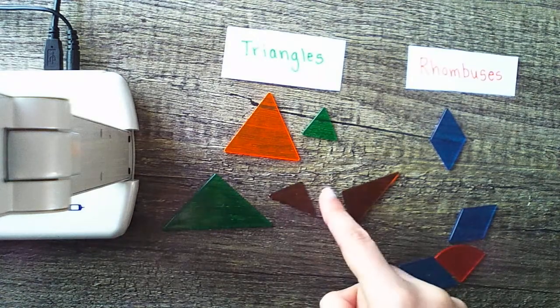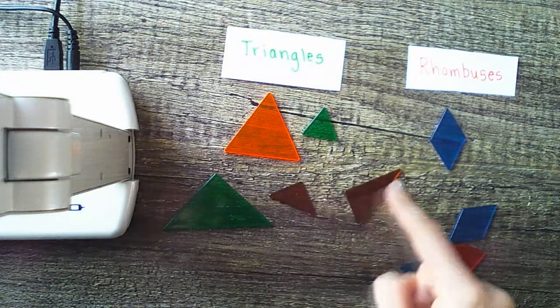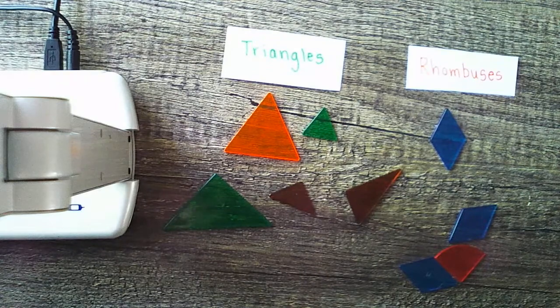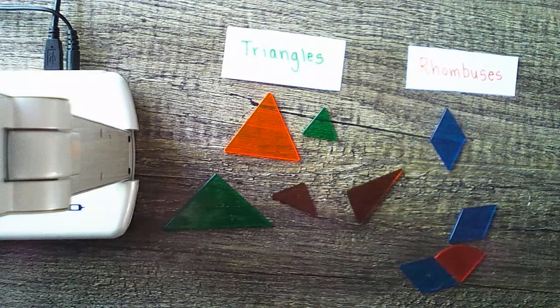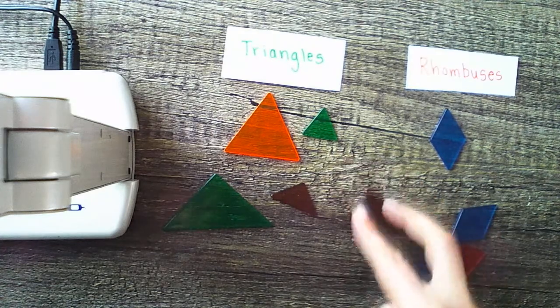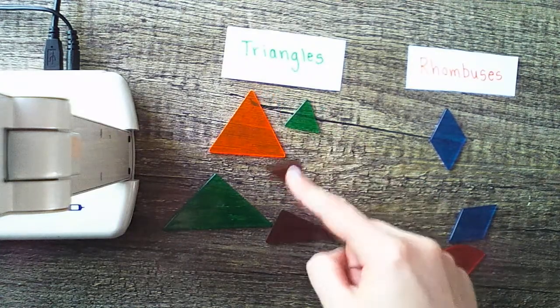These also have 1, 2, 3 sides and 3 vertices or corners. Three sides, three vertices, those are defining attributes of triangles. All these shapes here are triangles.